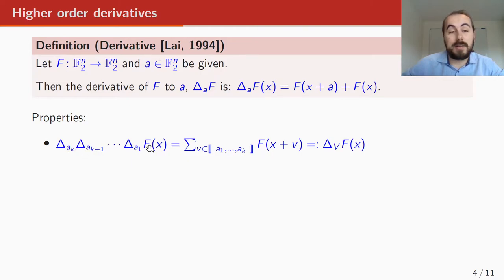So if a_1 up until a_k are linearly independent, you can re-apply the derivative. And it's shown that it's the same as summing over all vectors in the space spanned by a_1 up until a_k of f(x + v). We call this delta_V of f(x). If you have something that's not linearly independent, then this re-applied derivative will give zero.